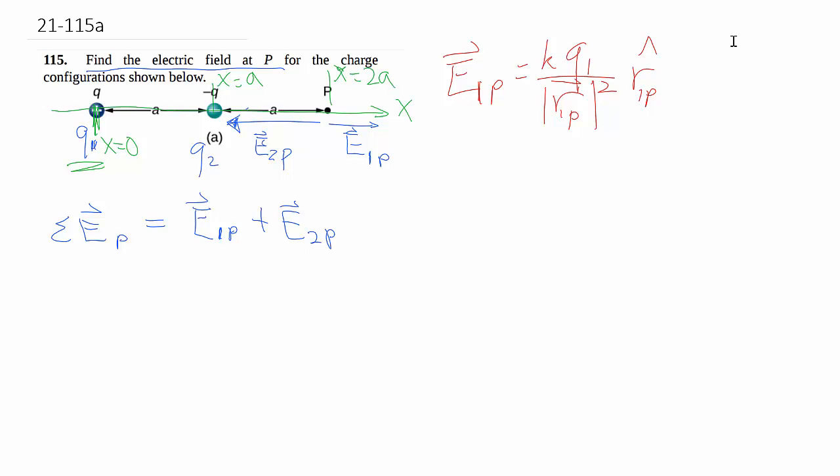The next step is to find each of these electric fields separately using the formula given here, where you have Q1 and then R1P which is the displacement vector from the source to the point. This underneath is purely the distance squared giving you the magnitude, and then the direction is given by the unit vector up here.